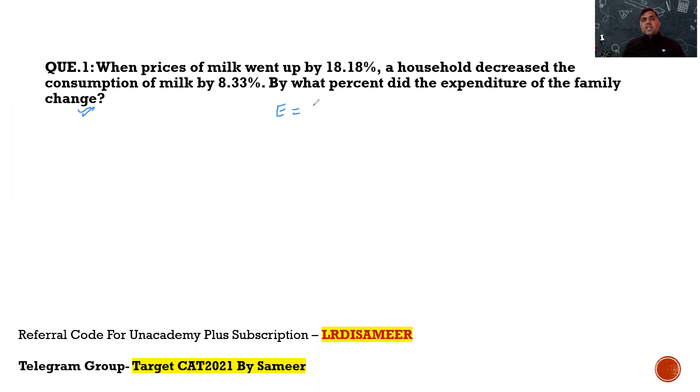Expenditure is known as price times quantity. Now, the prices of the milk went by 18.18 percent. The key in solving this question is you should know the fraction of 18.18. 18.18 is 2 by 11. Why? Because 1 by 11 is 9.09. So, therefore, 18.18 will be 2 by 11. So, the question says the prices goes up by 2 by 11. And the consumption gets decreased by 8.33 percent. You should know 8.33 percent in fraction is 1 by 12. So, quantity gets reduced by 1 by 12.